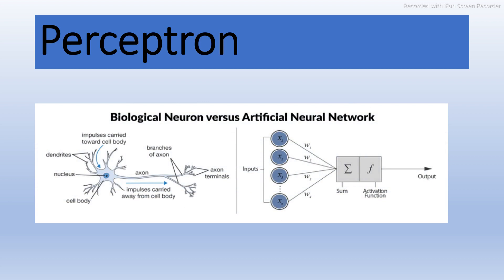Our biological neurons take input from the dendrites through the cell body and produce output from the axon. Similarly, in the artificial neural network, we take a sum of inputs — x1, x2, x3, up to xn — so n-dimensional inputs are available. We then apply different types of activation functions such as the ReLU function to get the output. This mirrors how the biological neuron works.